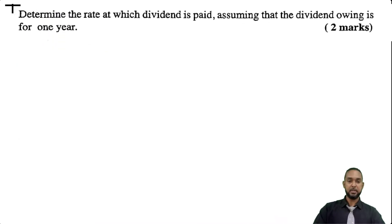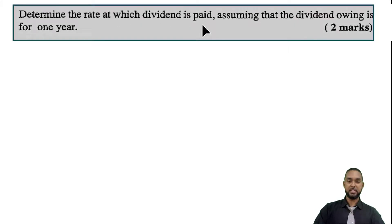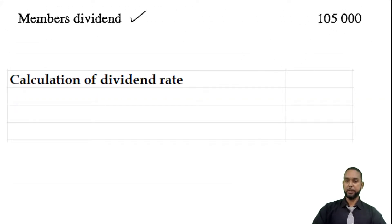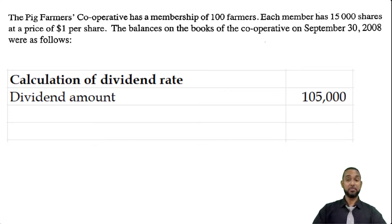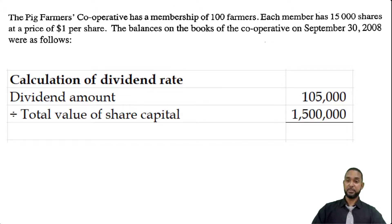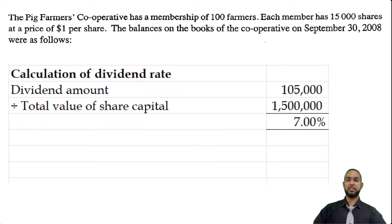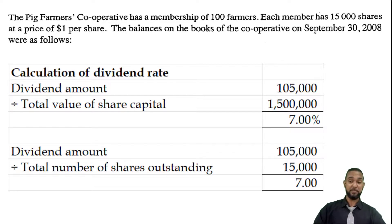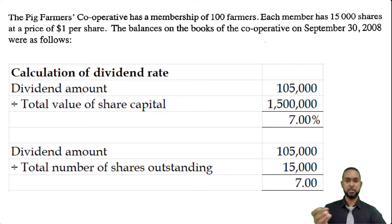The last part says to determine the rate at which dividend is paid, assuming that the dividend owing is for one year. The dividend owing is $105,000. We divide that by the total value of share capital, which is $1.5 million, and that gives us a 7% dividend rate. Alternatively, you can take the $105,000 dividend and divide by the number of shares to get a per-share dividend, which in this case is $7 per share. But I feel the dividend rate of 7% is what they were asking for — though either one should suffice.